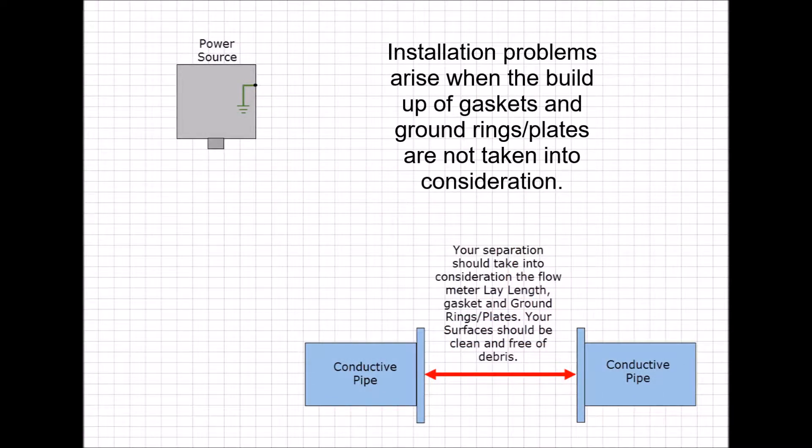Installation problems arise when the total clearance for installation is not taken into consideration. The meter lay length, total gasket width, and total ground ring or protection plate widths must be determined. Surfaces must be clean and free of debris for proper sealing and torquing.